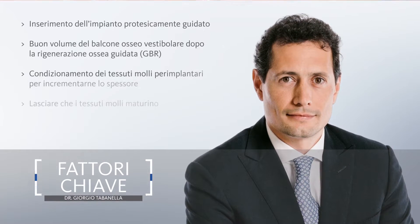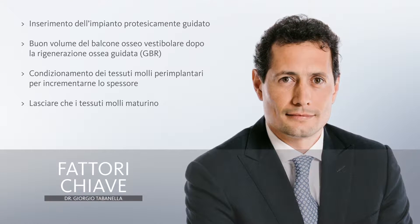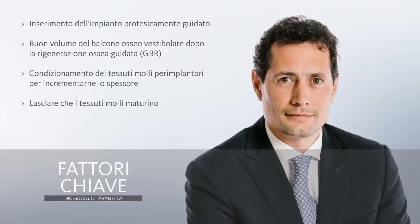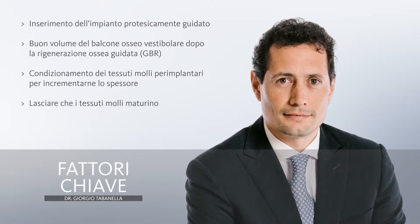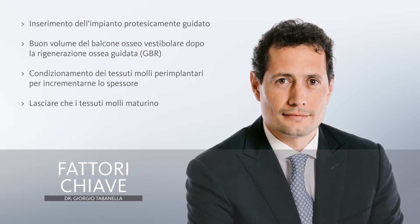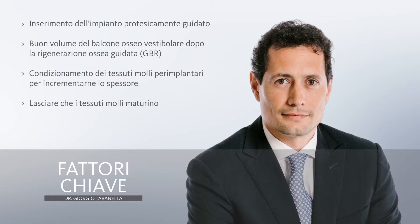So which are the key points here? First of all, we need to insert the implant in the prosthetic-driven direction. Then we need to have a good thickness of the buccal bone balcony. And we need to manage the soft tissue properly, which will create a perfect seal around the neck of our implant.